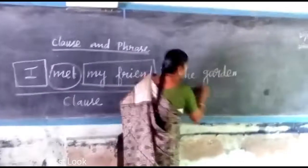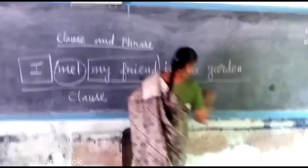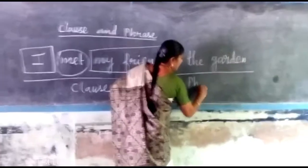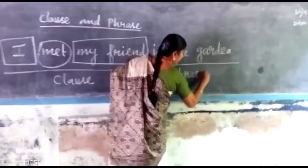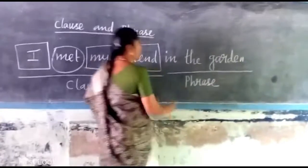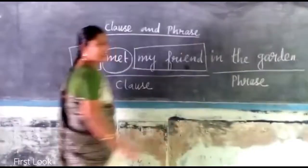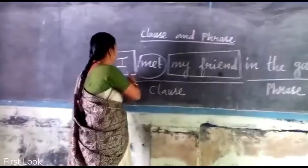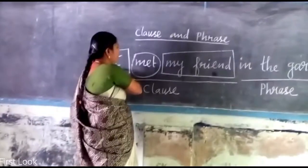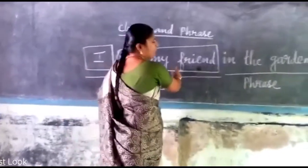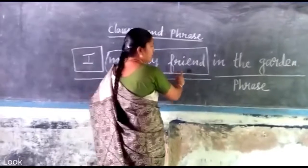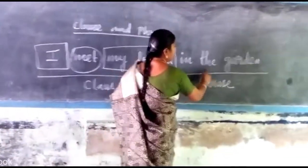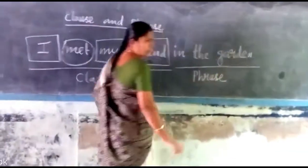In the garden is a phrase. So, we will see the difference between clause and phrase. 'I' is a subject, 'met' is a verb, 'my friend' is an object. Here, 'in the garden' is a phrase.